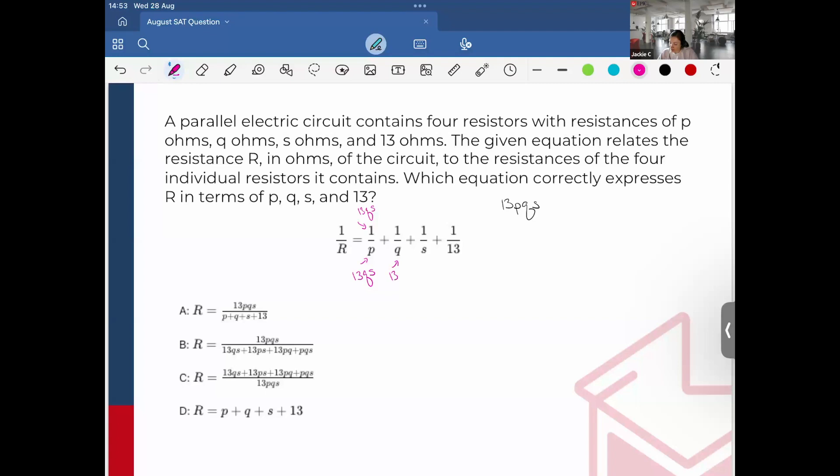Also here, 13ps. And then here I would multiply by 13pq, also this by 13pq. And finally, here would just be multiplied by pqs, and also this by pqs. So then when I do that, this will convert to pqs.